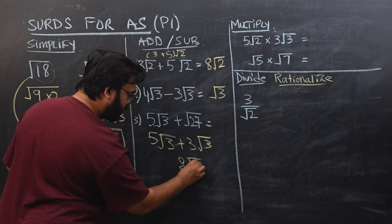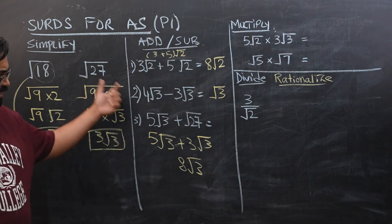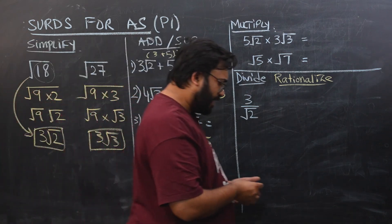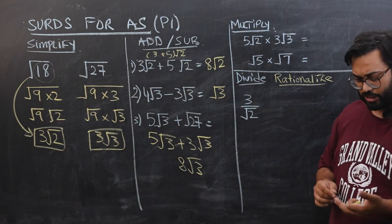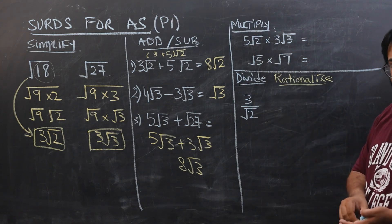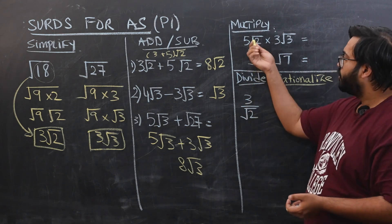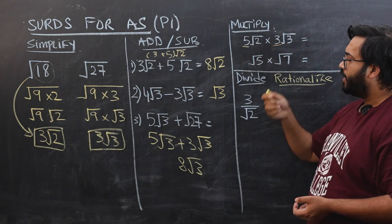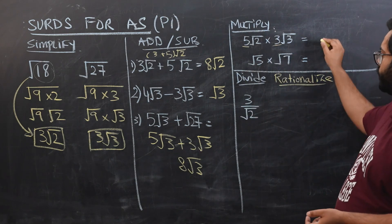Nothing really technical that you don't understand. Very comfortably now for this one. For multiplication, the rule is very simple. You have to multiply the number with the number, and you have to multiply the square root with the square root. So 5 times 3 is 15.